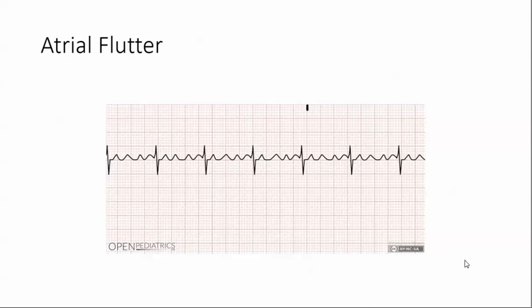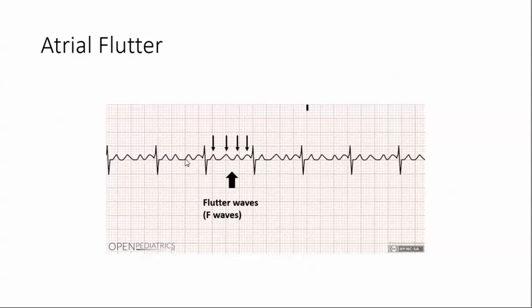Let's talk about the hallmark of atrial flutter. The big thing is the flutter waves right in here. In this example, you see the capital F waves — we have 1, 2, 3, 4 — and that's pretty constant throughout. You have a normal QRS. The PRI is not measurable because these are not P waves; they're flutter waves.